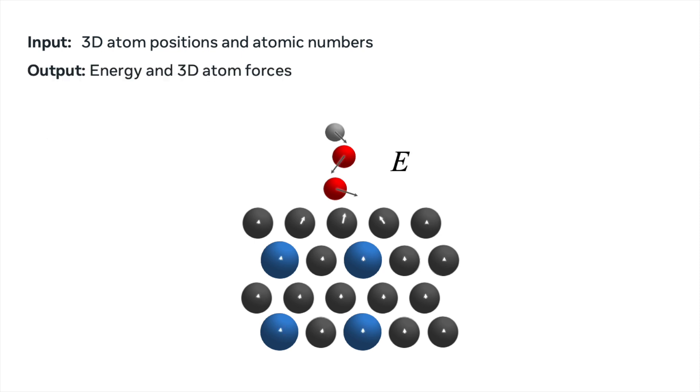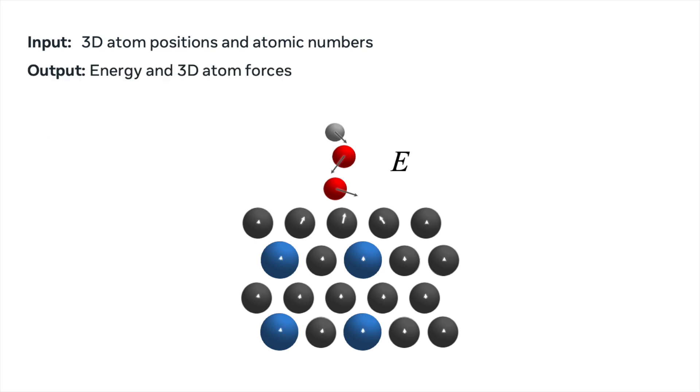And then the atomic numbers are going to be integers, typically ranging from 1 to 80, and there's going to be n of those as well. As outputs, we're going to be computing the energy of the overall structure and the 3D atom forces, where the energy is just a single real number for the entire structure. And the forces are going to be a three-dimensional force vector for every single atom. So there's 3n values overall.